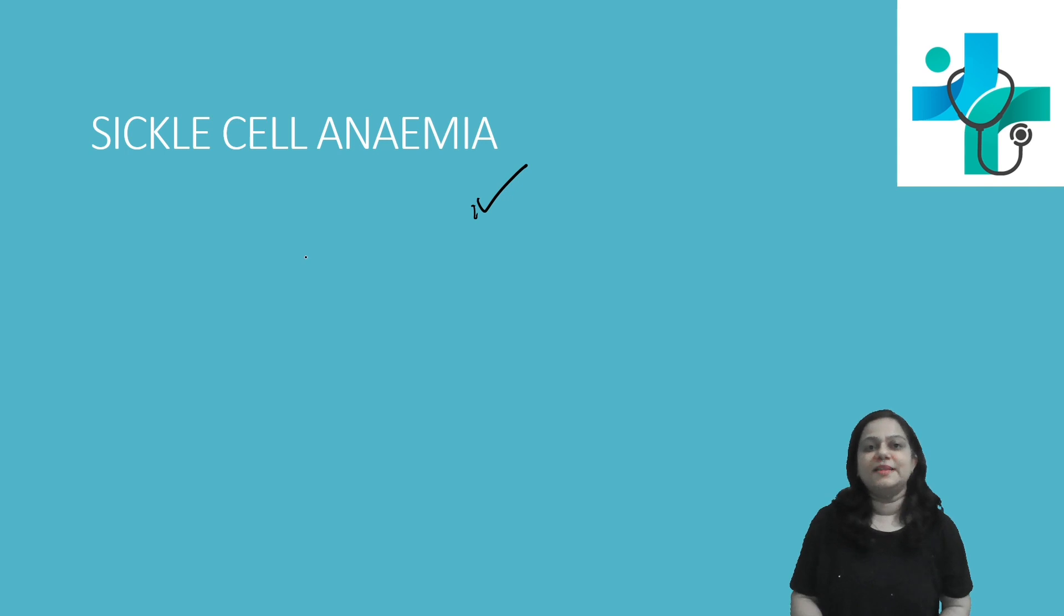Let us understand the topic, sickle cell anemia. Sickle cell anemia is one type of hemoglobinopathy. Here what happens is rather than formation of HbA, there is formation of HbS. It is an inherited condition.